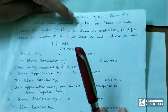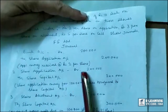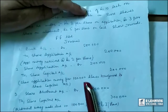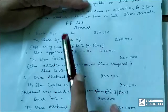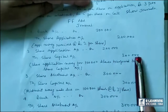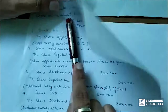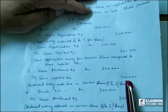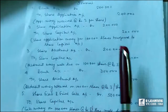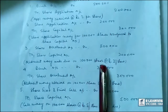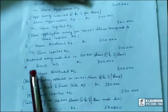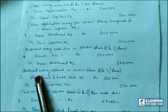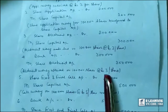Next is share application money transferred at rupees 3 per share on allotment: share allotment account debit 3 lakhs to share capital account 3 lakhs, being allotment money due on 1 lakh shares at the rate of rupees 3 per share. Then bank account debit 3 lakhs to share allotment account 3 lakhs, being allotment money received on 1 lakh shares at the rate of rupees 3 per share.